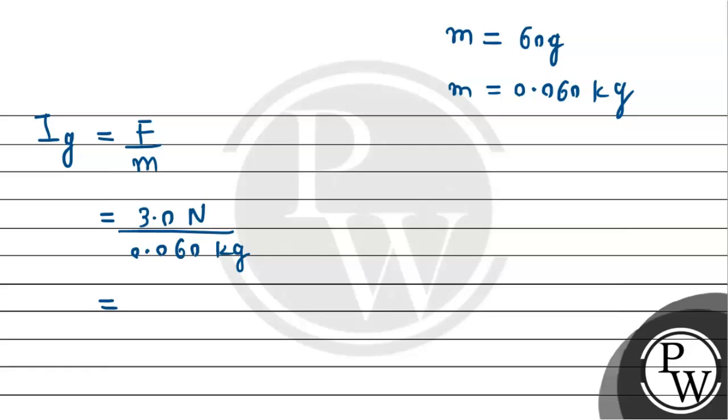So after dividing this, the gravitational field intensity comes out to be 50 N per kg. And this is our required answer for this question.